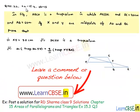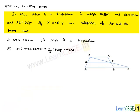Let us solve question number 22, Exercise 15.4, Chapter 15. In figure ABCD is a trapezium in which AB is parallel to DC, and DC is equal to 40 cm and AB is equal to 60 cm. If X and Y are midpoints of AD and BC, prove that: first, XY is equal to 50 cm; second, DCYX is a trapezium; third, area of trapezium DCYX is equal to 9 by 11 times area of trapezium XYBA.